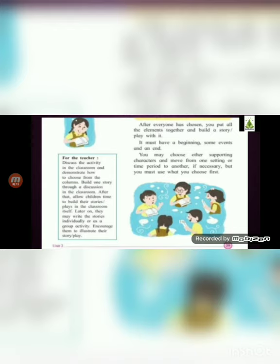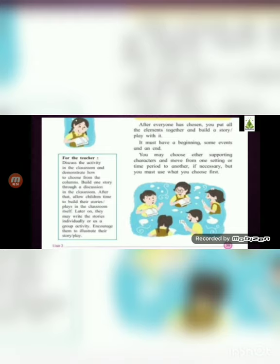After choosing the elements, you have to put all the elements together and build a story. If you have any siblings, you can play it with them. I want you to make a story with the elements chosen from all five columns — A, B, C, D, and E. You may also choose other supporting characters or move between time periods if necessary, but use what you chose first.